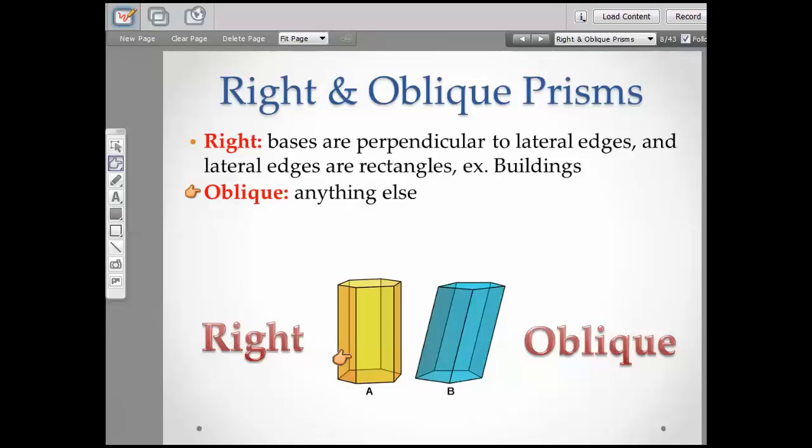If you look right here, this is a right prism, this yellow one, prism A. And if you look, all of the lateral edges are perpendicular. So this is perpendicular, this is perpendicular, and so on. Now, if you look at an oblique, it's always slanted like the Leaning Tower of Pisa. They're always slanting.